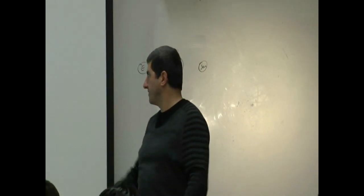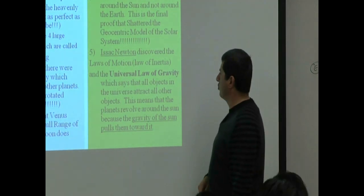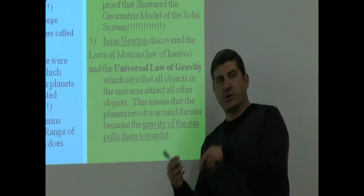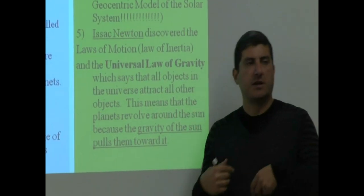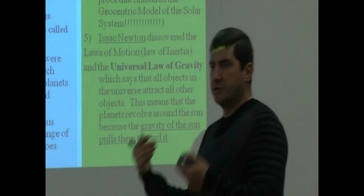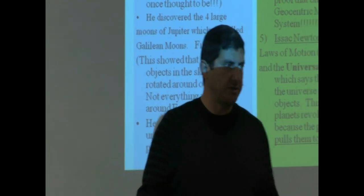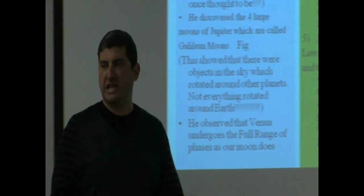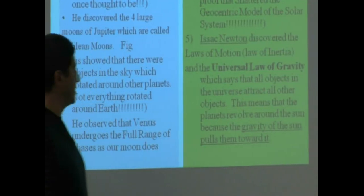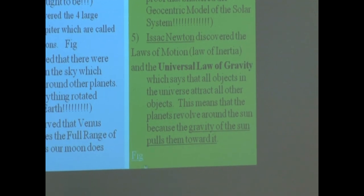From there, we've got his law of gravity: all objects in the universe attract all other objects. The earth attracts the apple — the apple falls. The sun attracts the earth — the earth goes around the sun. The earth attracts the moon — the moon goes around the earth. That's what's causing all of this. Without gravity, we wouldn't have planets, we wouldn't have orbits. The planets revolve around the sun because the gravity of the sun pulls them toward the sun.